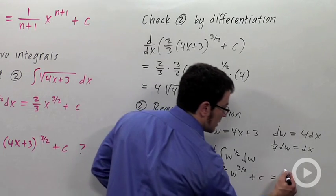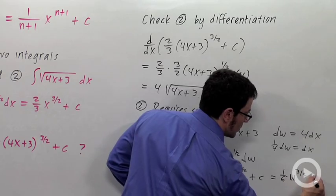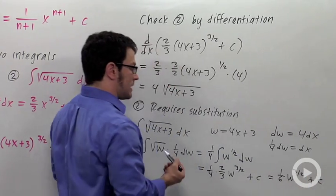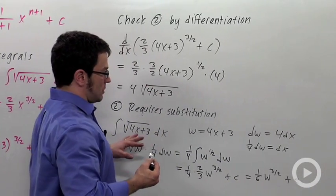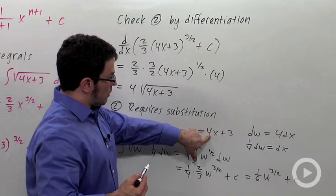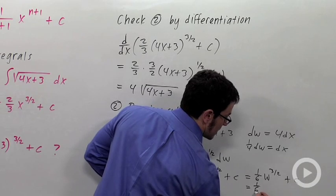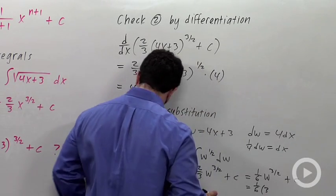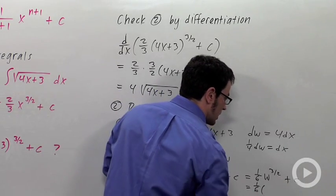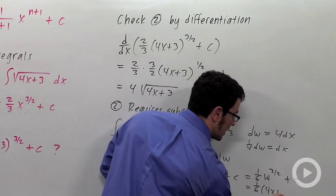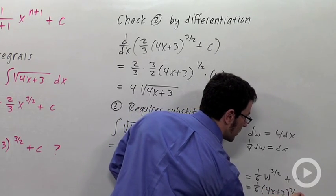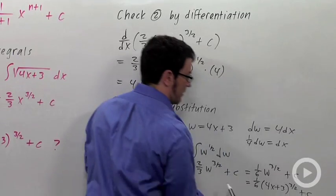And the last thing to do is resubstitute for w. I need to put a 4x plus 3 in there. So, this is 1 sixth. 4x plus 3 to the 3 halves plus c. That's my final answer.